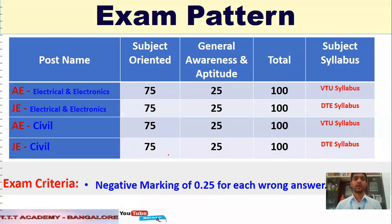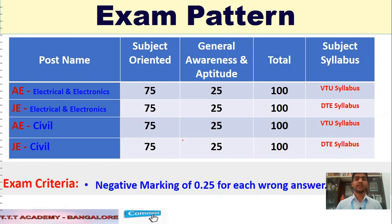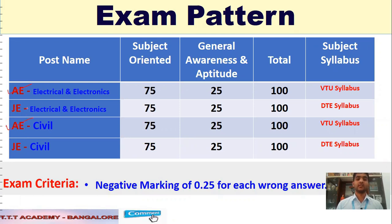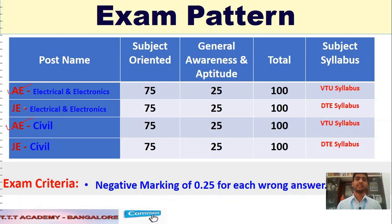Before I proceed with the tips, let me cover what the exam is and the examination pattern. If you belong to the electrical or civil department and are focusing for AE — Assistant Engineer — you should consider your department. If you have completed your engineering, you are eligible for AE Electrical, or if your department is civil, you are eligible for AE Civil.